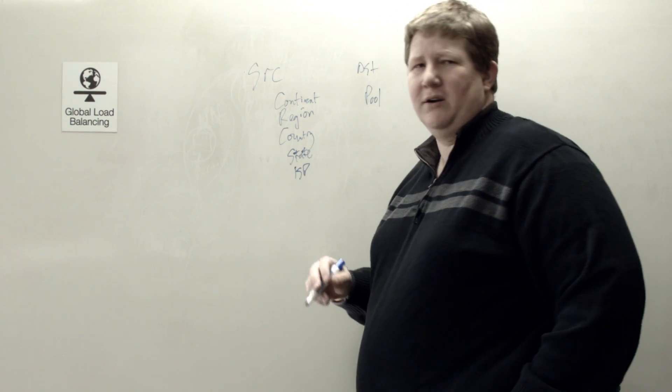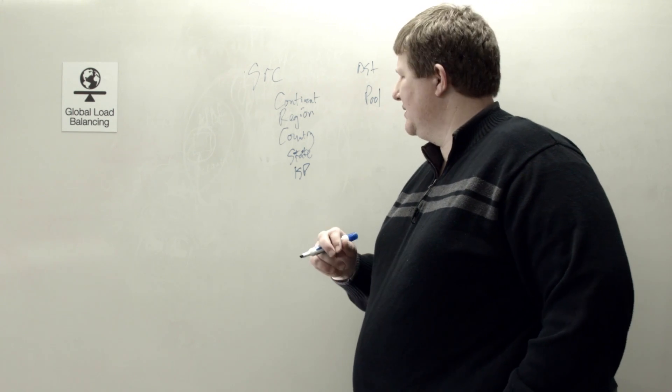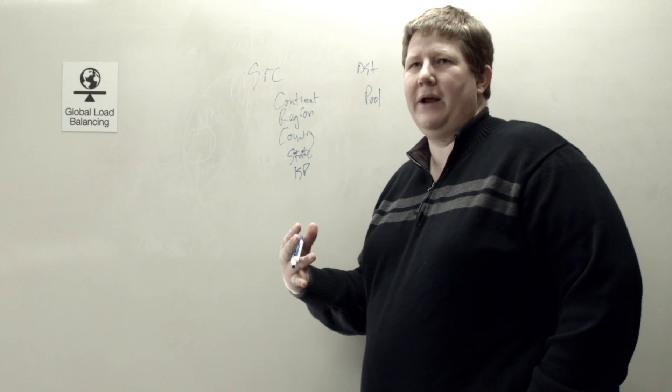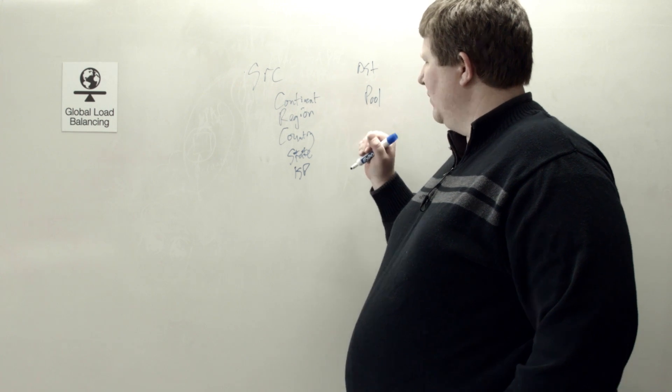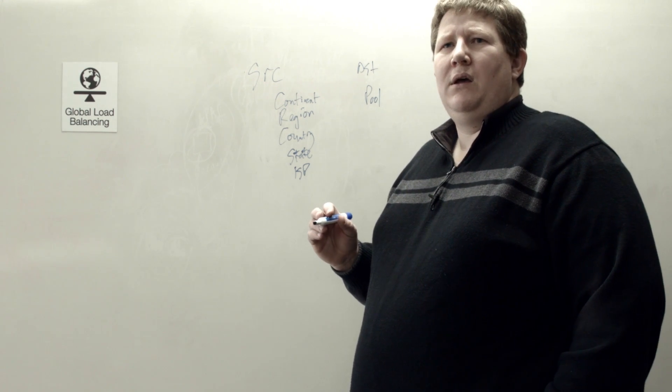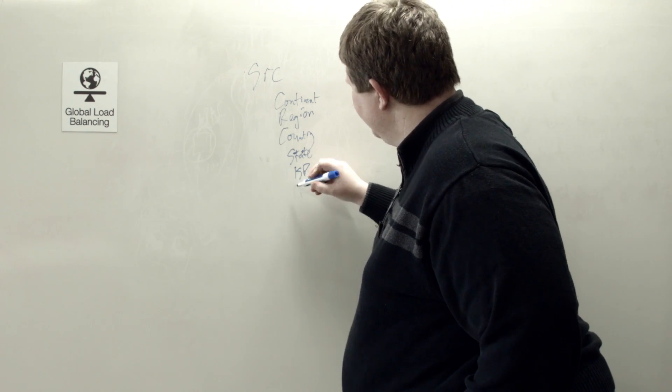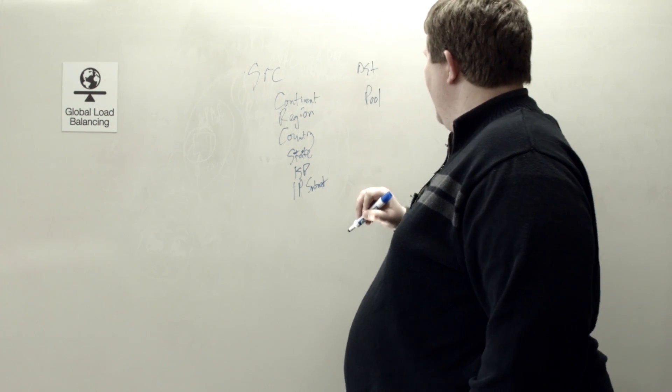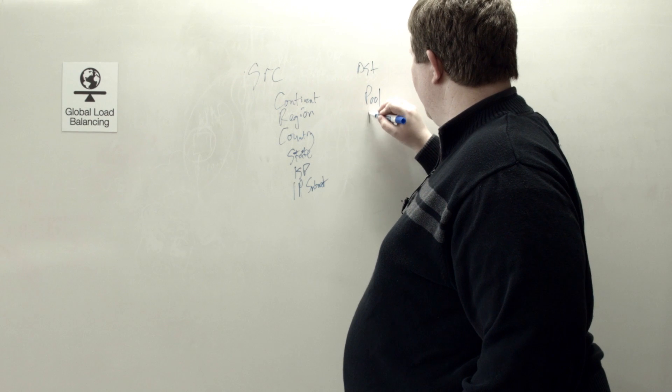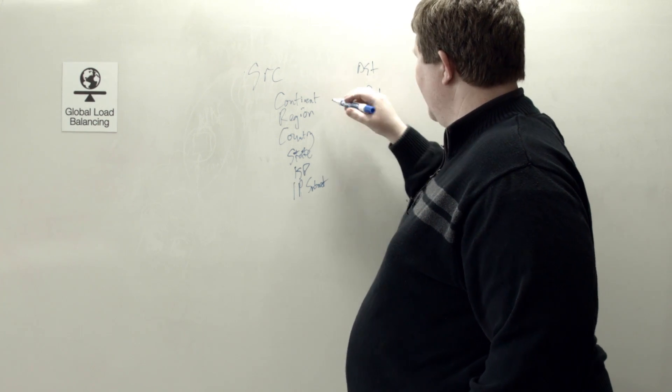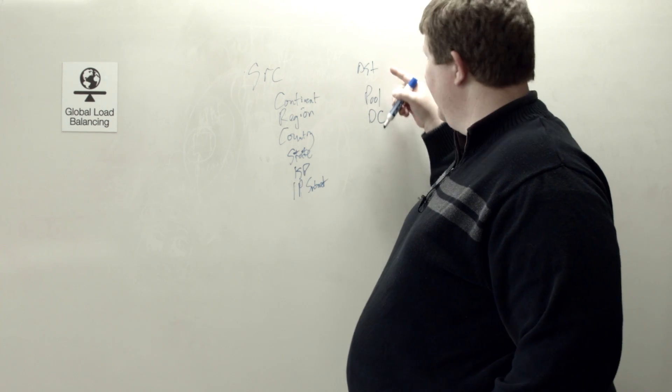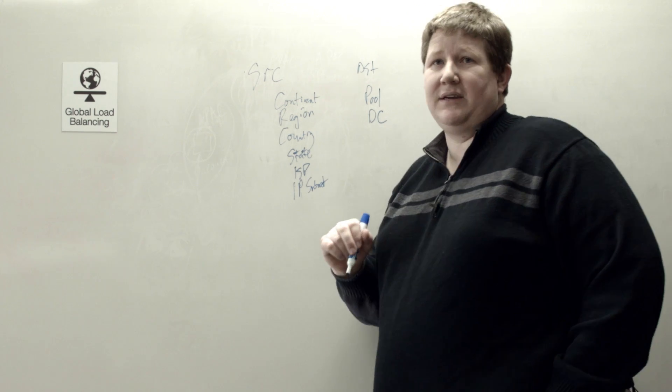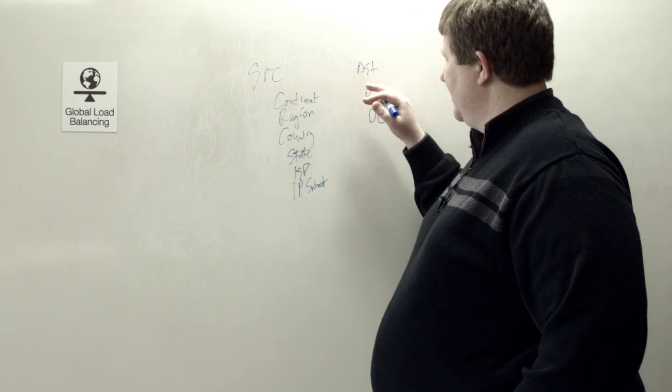You can do it ISP. Most of the ISPs in there are China. They do have a couple other ones that are not specifically located in China. I'm missing one. What am I missing? Oh, IP subnet. So you can do it by IP subnet. And then of course, you can do it by all six of those and then pool and data center as well. So all six of these also work as a destination, but you can do pool and data center as well. And so that's your source and destination.